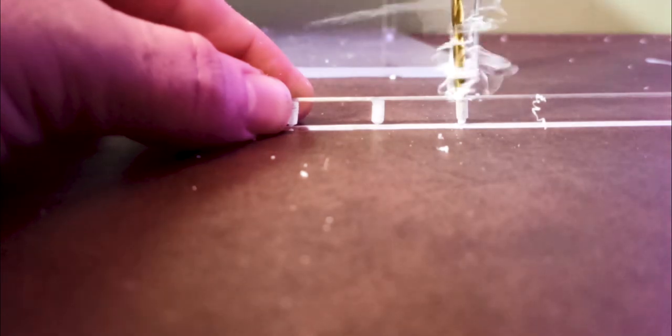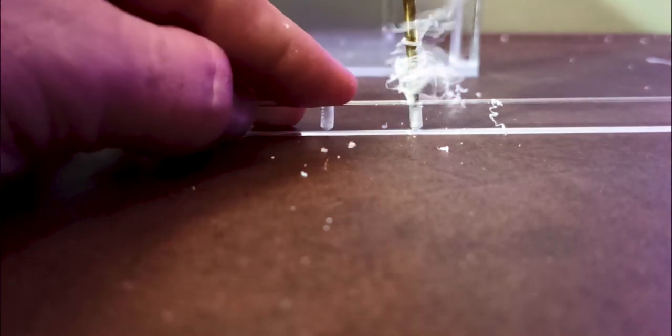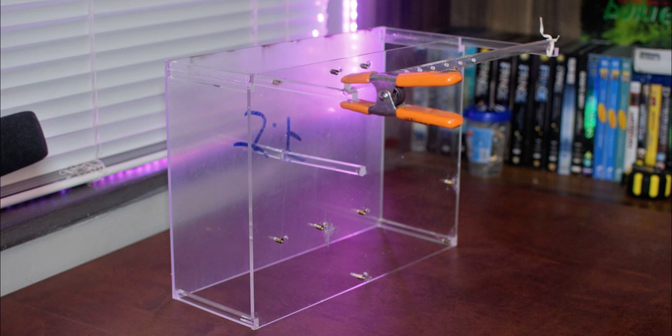After the satisfying drilling process, I had to create the threads for the thumb screw. So this is a tedious process of screwing it in and out until the thread is created. With that done, I glued the rod that was going to support the bracket for the expansion cards back.